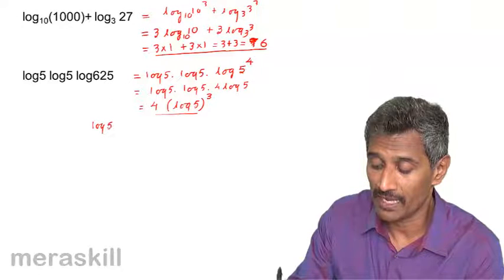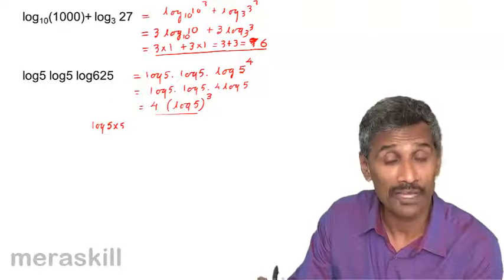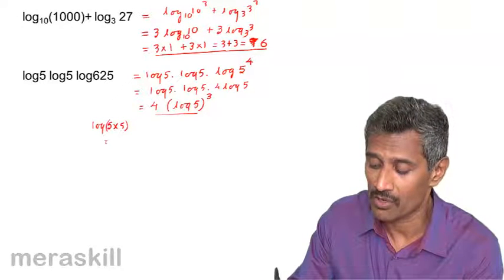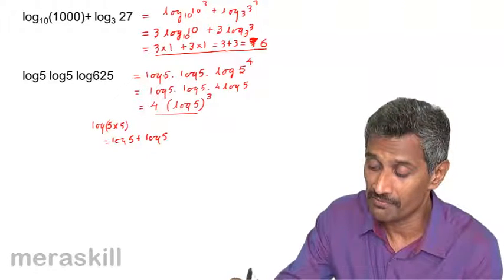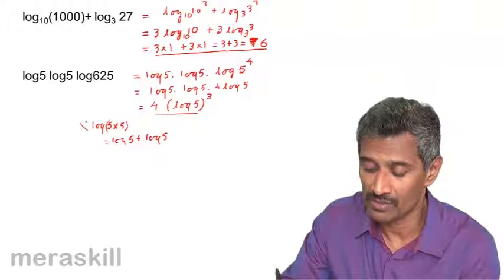This is not to be mixed with log of 5 times 5. Log of 5 times 5 can be written as log 5 plus log 5. But log 5 times log 5 is not the same as this.